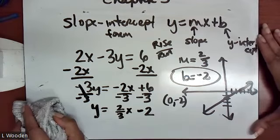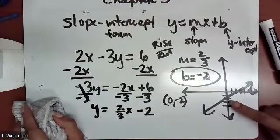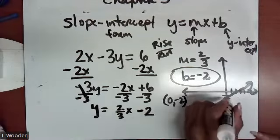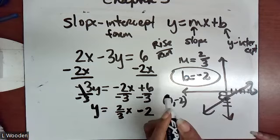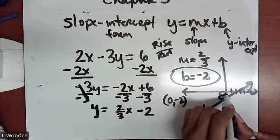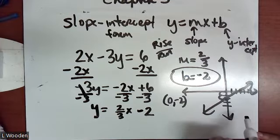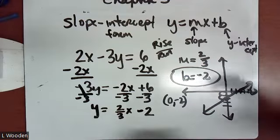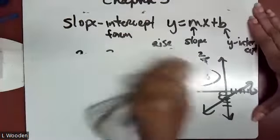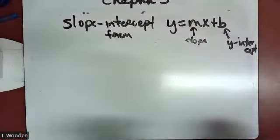A student asks whether to count from the point or a notch above it. When starting at the point, say negative 2, you go: one, two — you start and then move. Another student asks about going up and left. Actually, you could rise up and use the negative to run left, but that's confusing. It's cleaner to always apply the negative to the rise part — go down — and always run to the right. The points still work out the same.